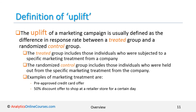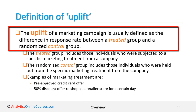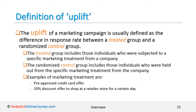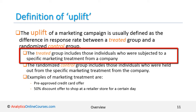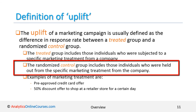So, how do we define uplift? The uplift of a marketing campaign is usually defined as the difference in response rate between a treated group and a randomized control group. The treated group includes those people who are subject to a specific marketing treatment from the company. The randomized control group includes those people who are held out from the specific marketing campaign.